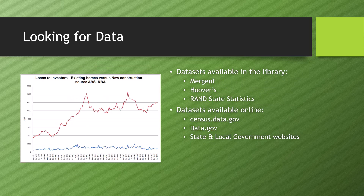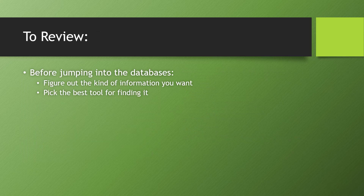Finally, if you're looking for specific sources of data, it really depends. The library has access to some databases, including Mergent, Hoovers, and Rand, which provide access to datasets and statistics. However, some of the richest data sources available to you aren't in the library, but are rather provided by government. The federal government, through sites like census.data.gov and data.gov, can provide you with datasets on everything from population and demographics to power usage and unemployment rates. State and local governments can be useful sources of geospatial datasets for GIS projects as well. So before you plunge into the databases, figure out the kind of information you want, and then pick the best tool for finding it.